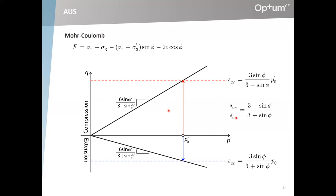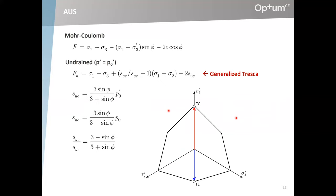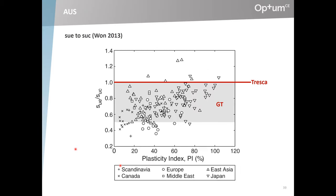If you insert a reasonable friction angle — say 30 degrees — you will find a ratio of about 0.7. So that's an expected ratio. And this generalized TRESCA model accommodates that, where you input the undrained shear strengths directly. If we look at what ratio corresponds to various friction angles in the range of 15 to 45 degrees, we are at about 0.6 to 0.85. So probably outside this range it's harder to justify the model, but definitely inside this range where the majority of the data is, the model is fully justified.